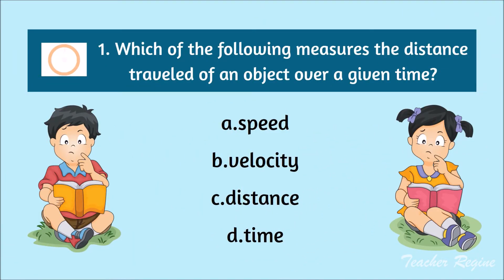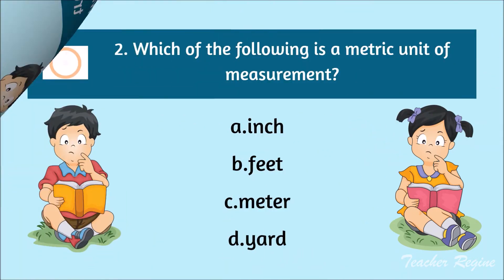Number 1. Which of the following measures the distance traveled of an object over a given time? A. Speed, B. Velocity, C. Distance, D. Time. The correct answer is A. Speed.